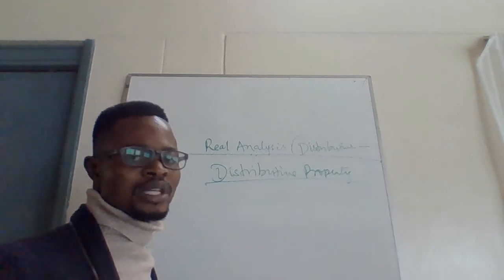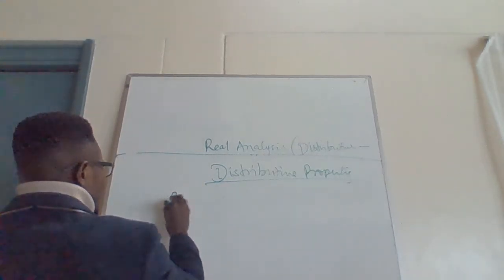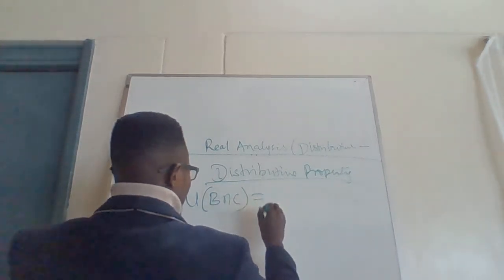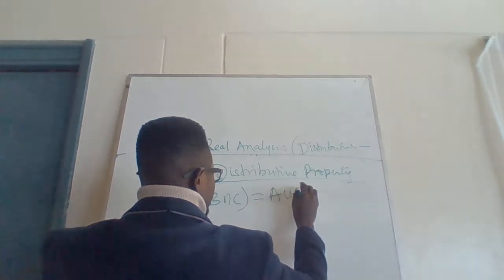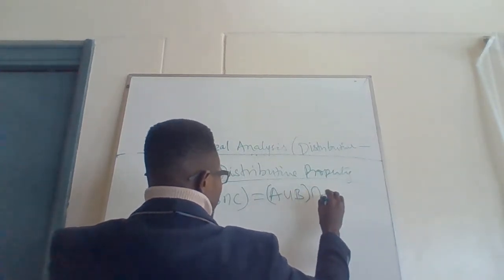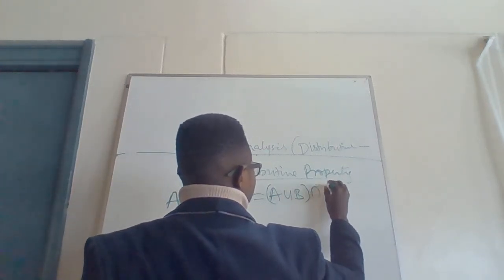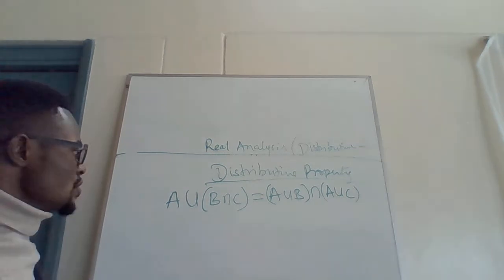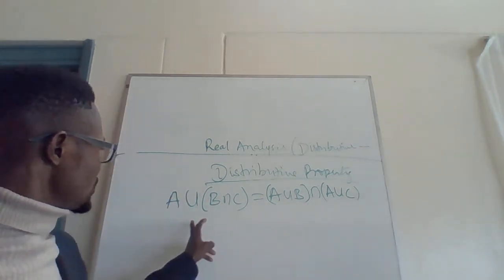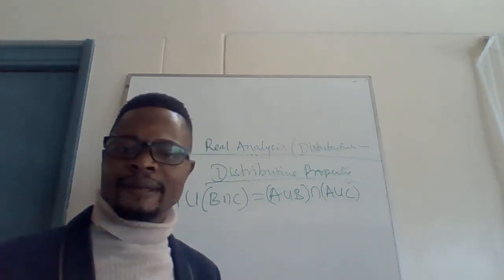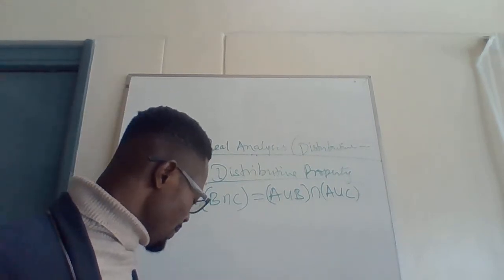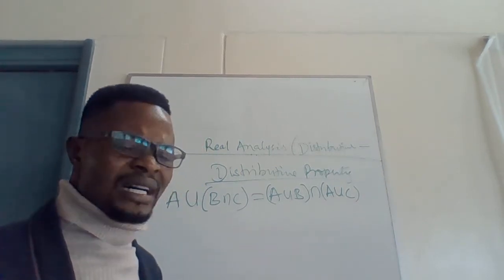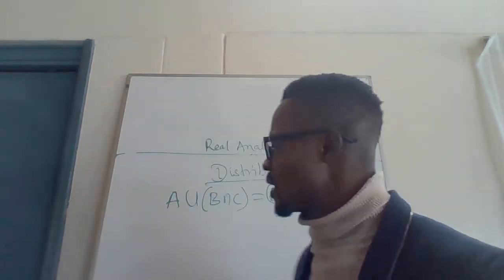So here we have A union (B intersection C) equal to (A union B) intersection (A union C). This is the equation we are going to prove. Let me confirm that the equation is correct: A union B intersection C equals A union B intersection A union C — and it is correct. So we are going to prove how we get this.